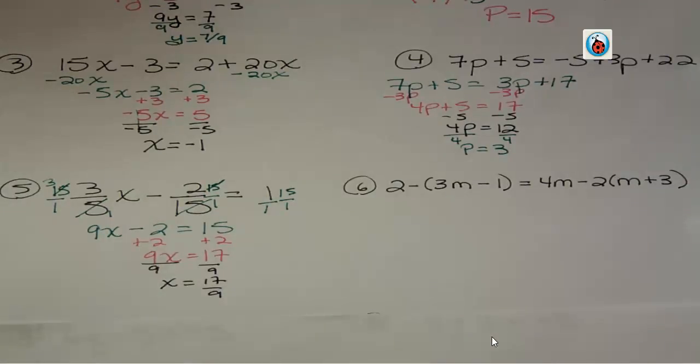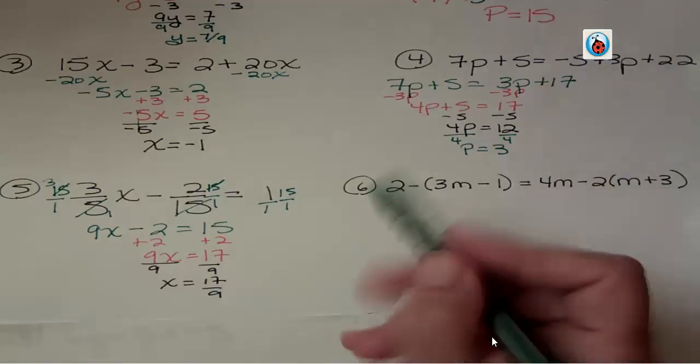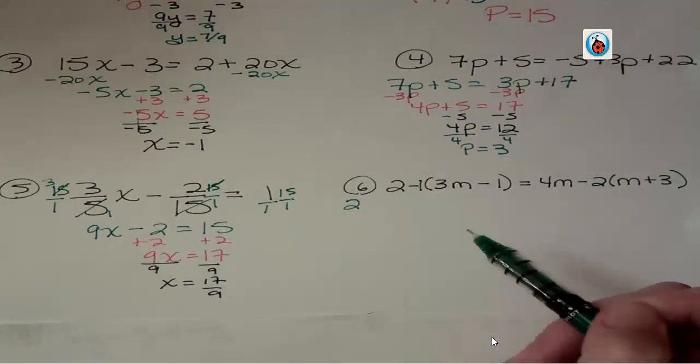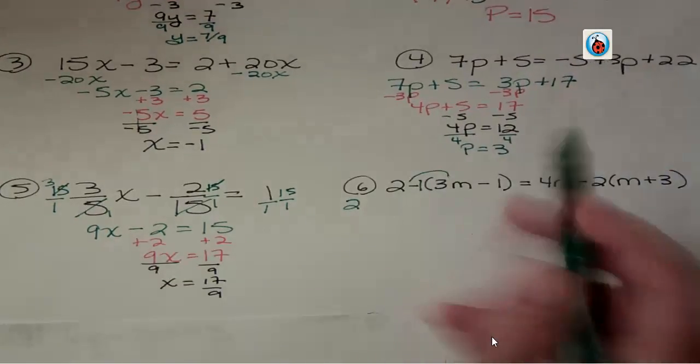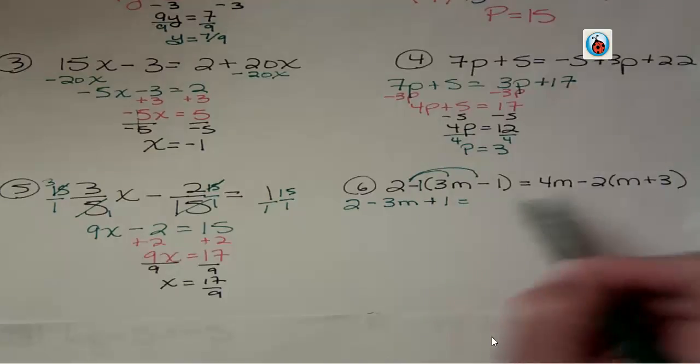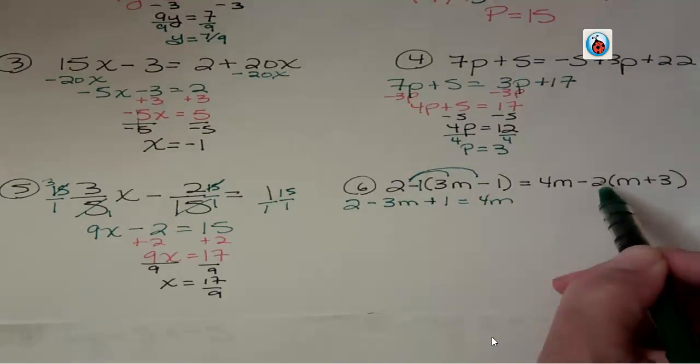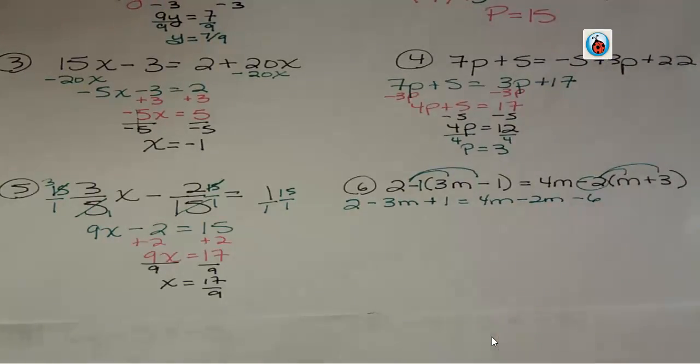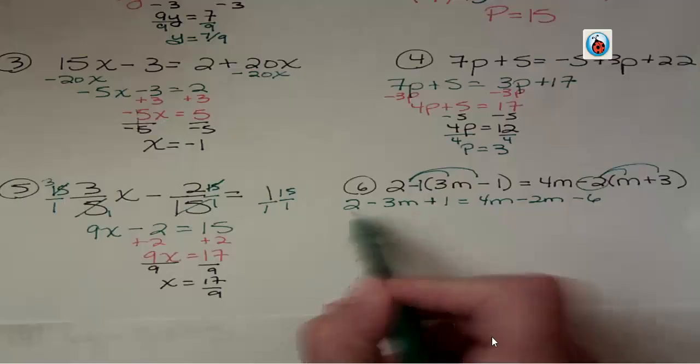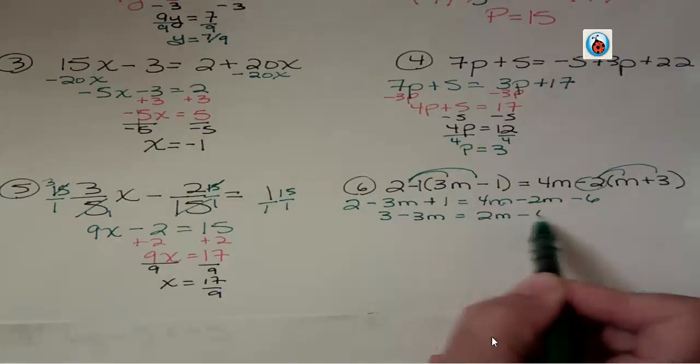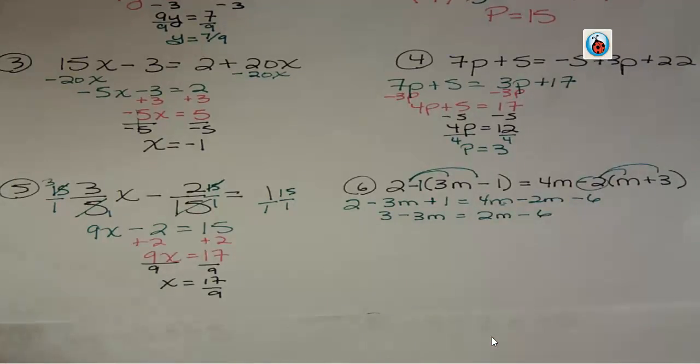Number 6. We're going to have to distribute. We have to distribute a couple of times. This 2 has nothing to do with that distribution. What are you actually distributing? You're actually distributing a negative 1. Negative 1 times 3m. Negative 1 times negative 1. Then I have 4m. Now I'm distributing this negative 2. Negative 2 times m. Negative 2 times 3. Always pause the video, try them, and then come back and see how you did. So I have 2 plus 1. I'm simplifying both sides here.